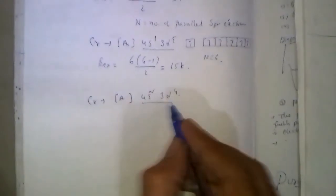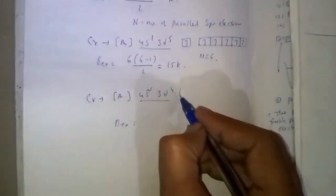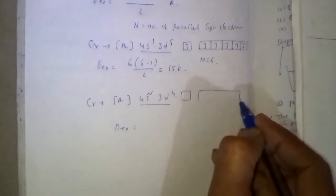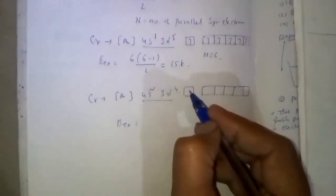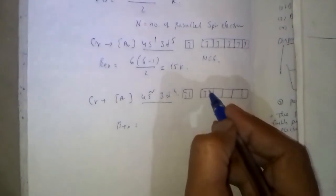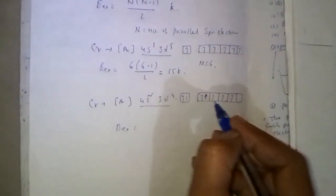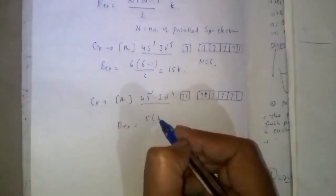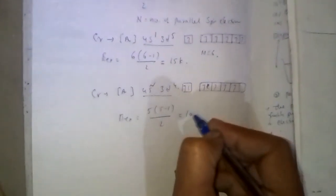In case of this configuration, parallel spin electrons are 1, 2, 3, 4, 5. So 5(5-1)/2, that is equal to 10k.